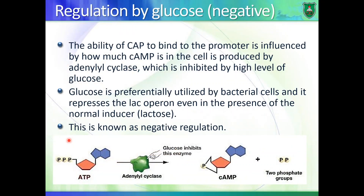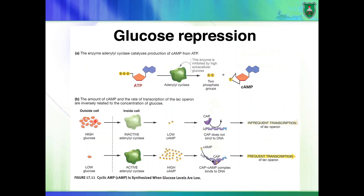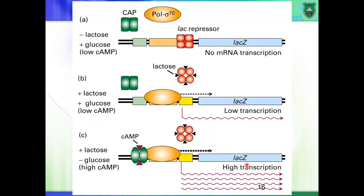So if there is high glucose: glucose binds to adenyl cyclase, adenyl cyclase is inhibited, resulting in low levels of cyclic AMP in bacteria, CAP cannot bind to DNA, and there is very little transcription. But if there is no glucose, adenyl cyclase is very active producing a lot of cyclic AMP, cyclic AMP binds to CAP, and CAP can then bind to DNA upstream of the RNA polymerase binding site — the promoter — giving a lot of transcription.